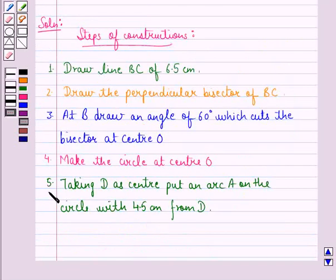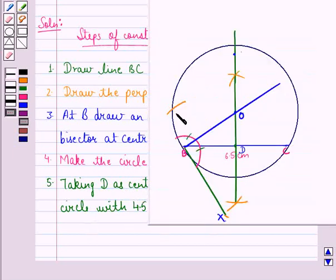Step 5 is, taking D as center put an arc A on the circle with 4.5 cm from D. So like this we put an arc A on the circle with 4.5 cm from D.